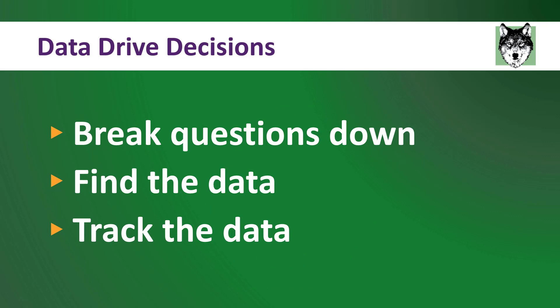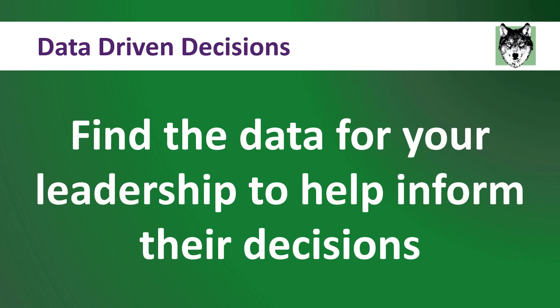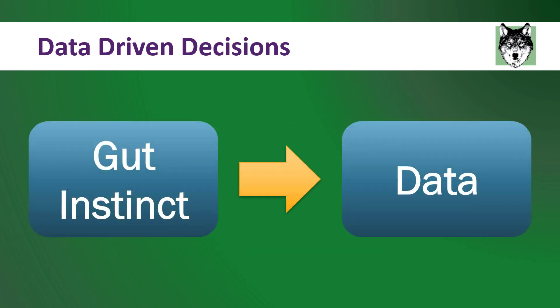Let's go back to the process. Now we have broken the questions down. Next, we need to go and find the data — you can go into the financial system and pull out the data to answer these questions. And finally, you can track this data over time, because this is not going to be the only time you hire new people. One of the greatest things you can do as an accountant or finance professional is to find the data for your leadership to help inform their decisions. My hope is that all of this helps you understand the mental shift — breaking down the question and using data to guide the decision rather than gut instinct.